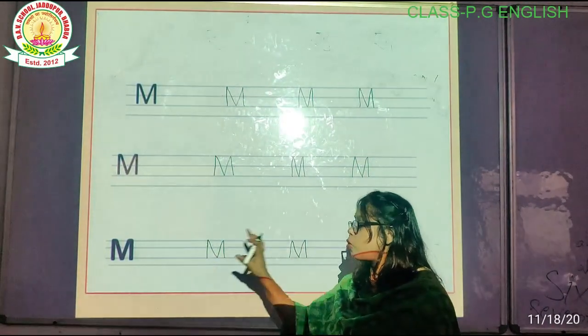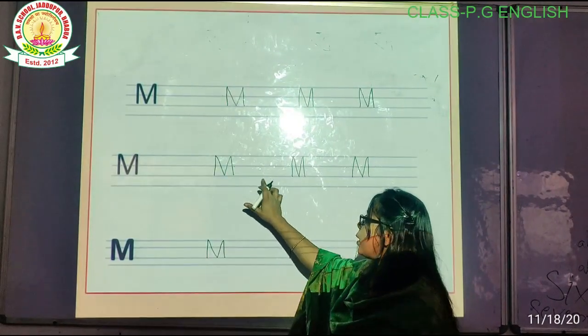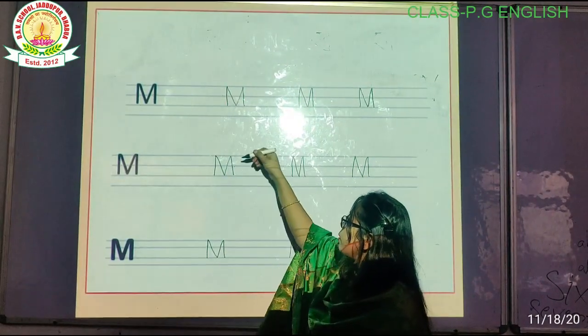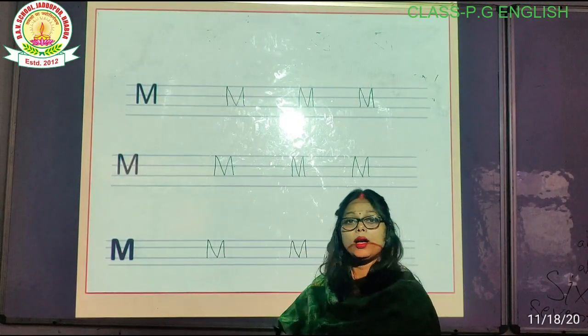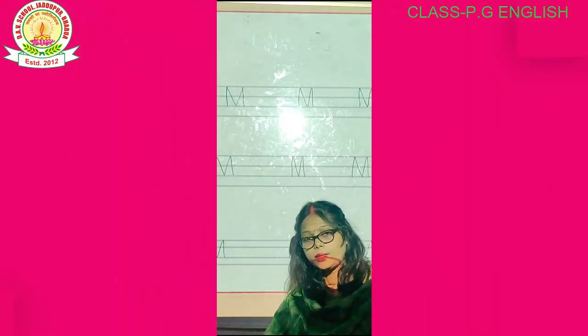M for monkey — you can write it. One, two, three lines — you can write it. Okay? Thank you.